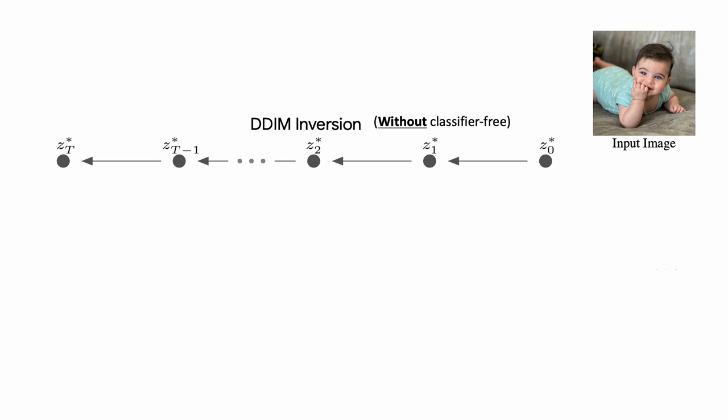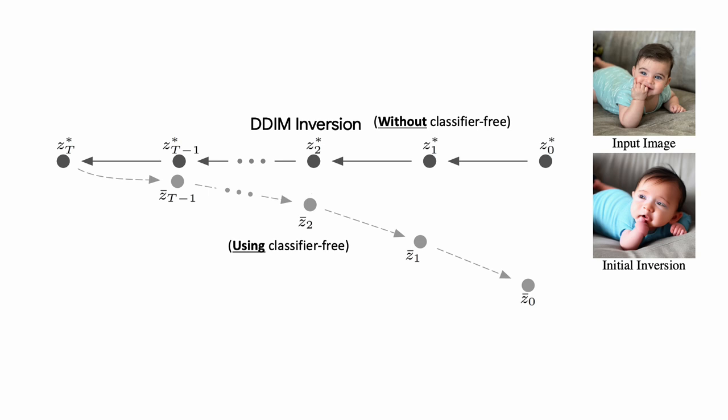So we use the DDIM inversion to produce a latent trajectory from the original image z0 to a noise vector zt. Fitting this noise vector to the diffusion process results in distortion when the classifier-free guidance is applied, as the latent codes become farther away from the original trajectory.